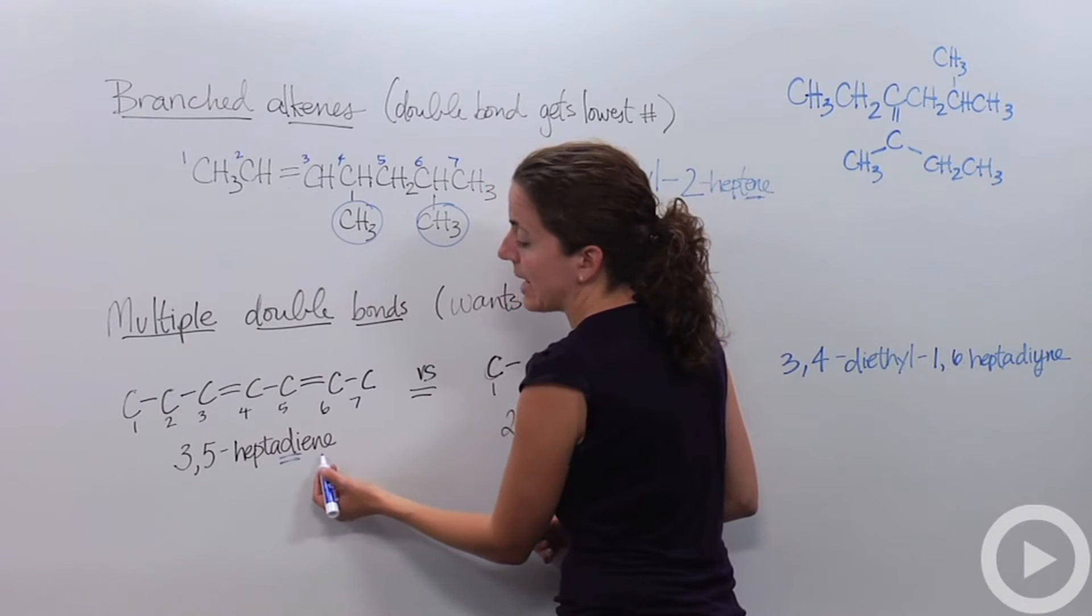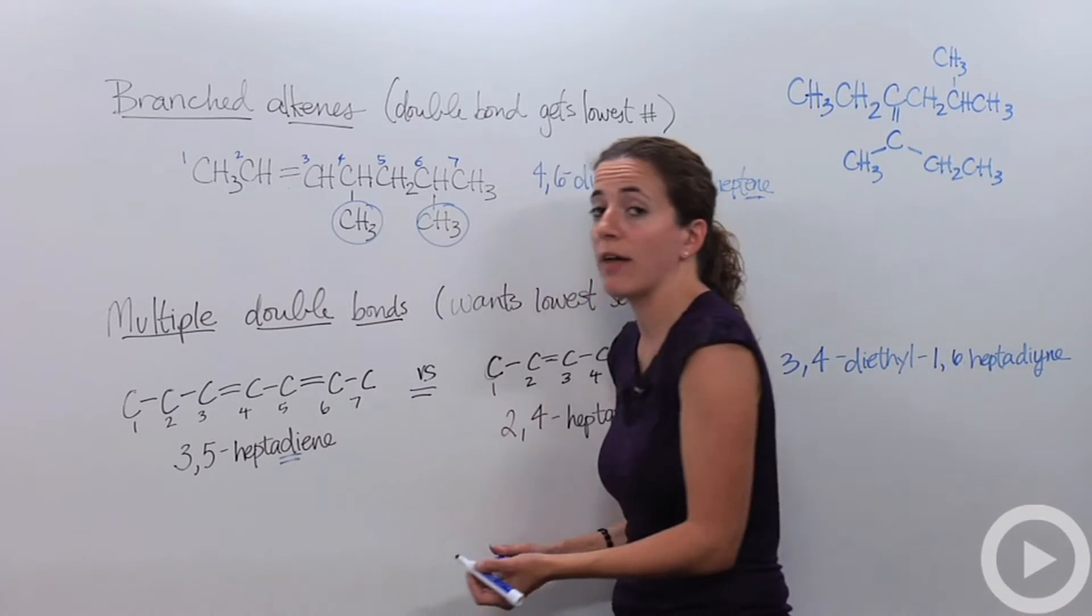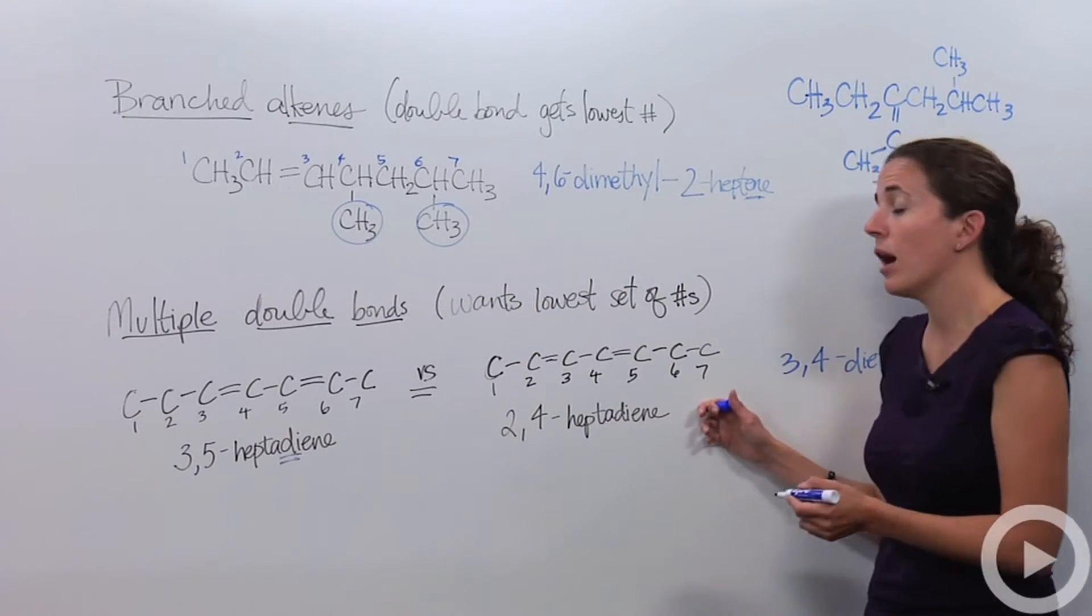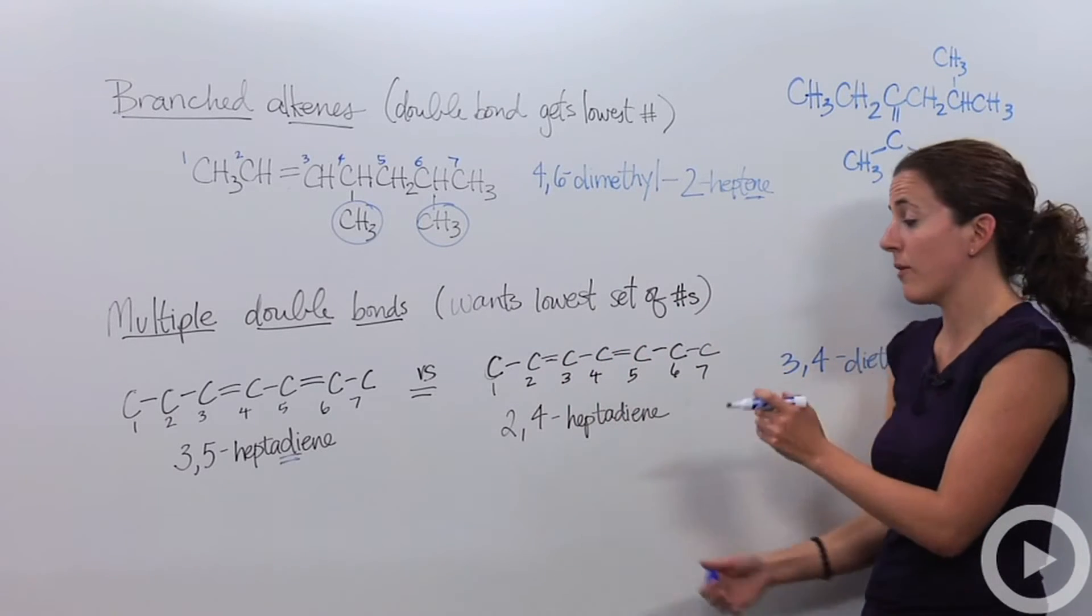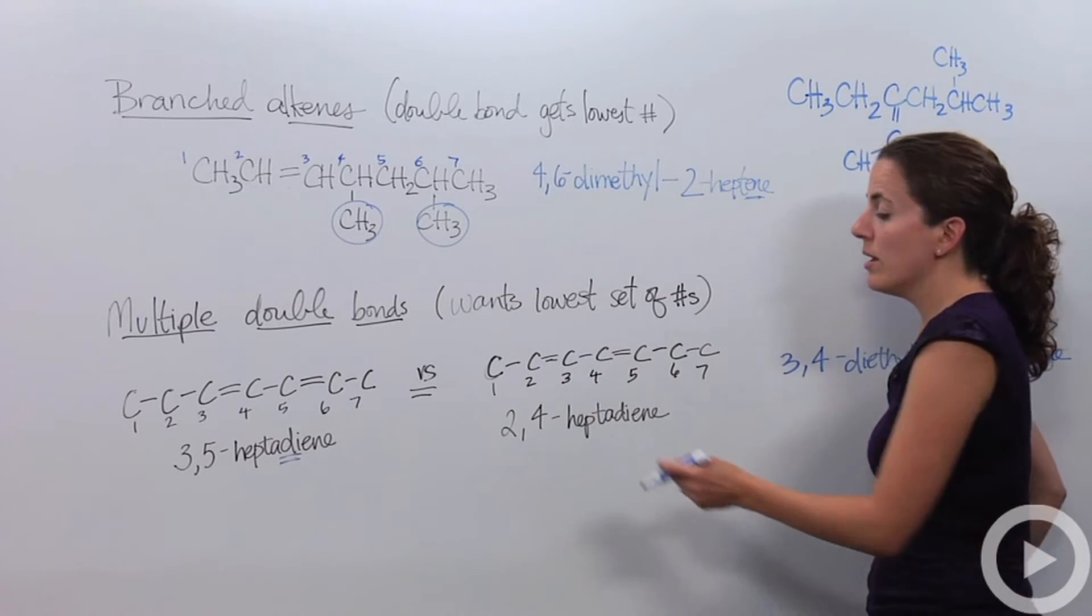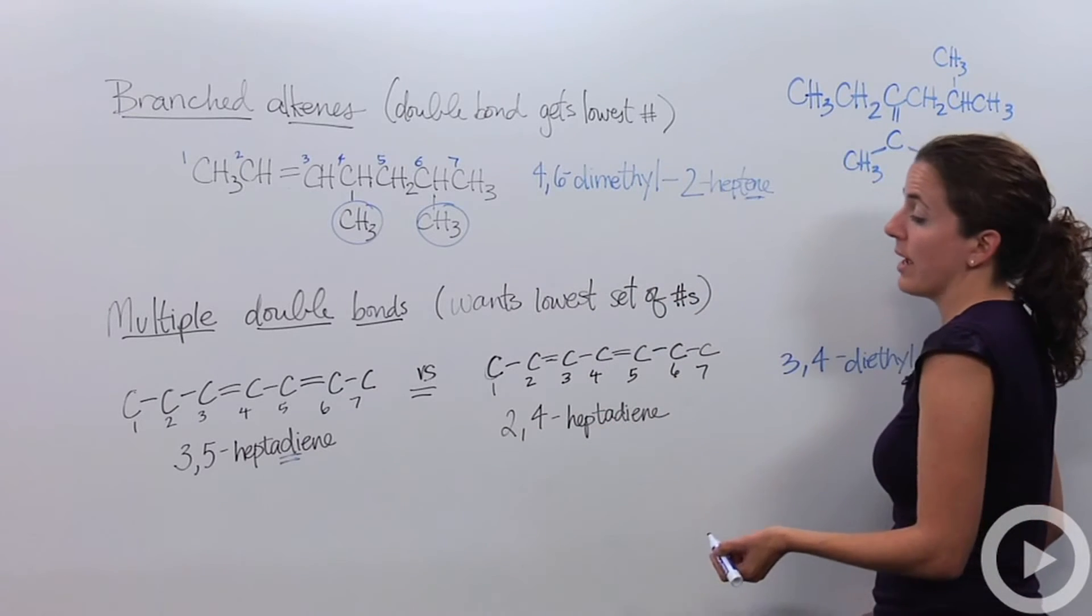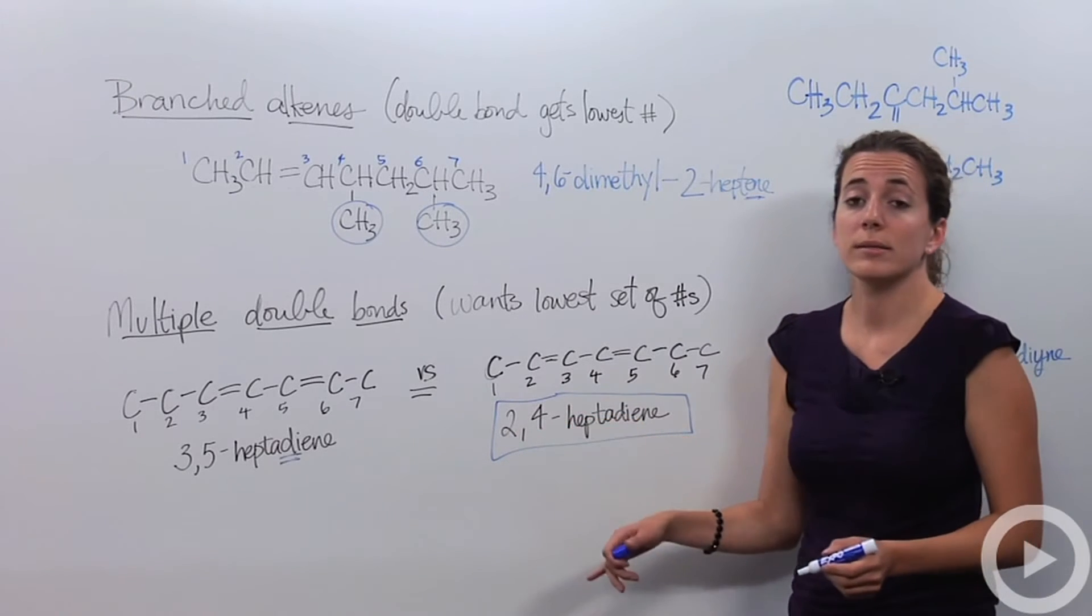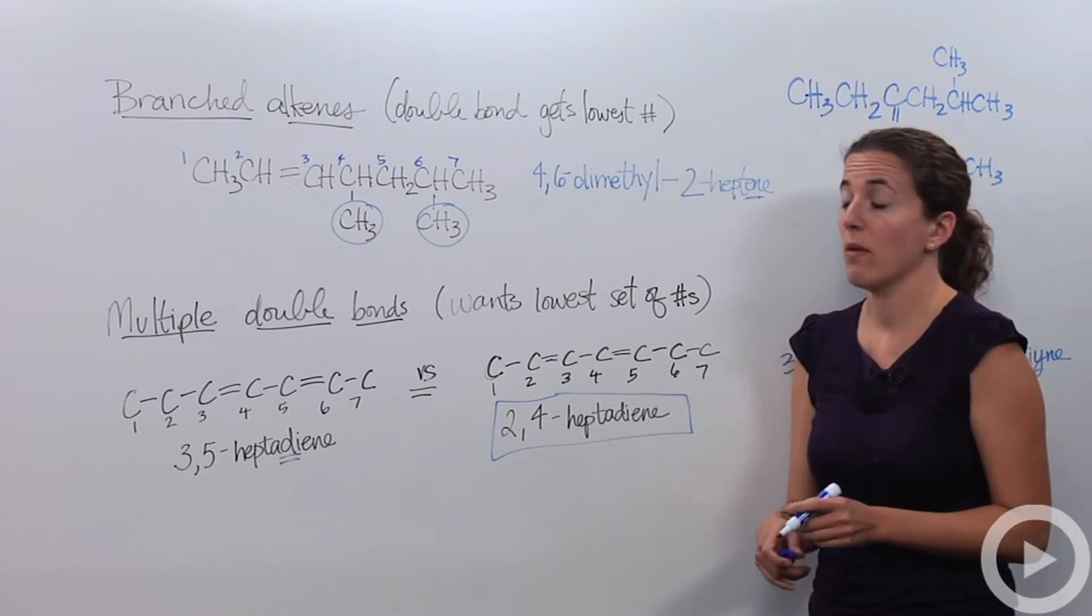So this is 3,5-heptadiene. Heptadiene, hepta means seven, di means two double bonds. Ene means that they're double bonds. Or it could look like this. It's the same exact chain except it's just flipped the other way. So this would give my carbon chain the double bonds between the two and the four. So which would I like better? 3,5-heptadiene, or 2,4-heptadiene? This is actually the correct answer because it gives me my numbers in the lowest numbers of the double bonds within the chain.